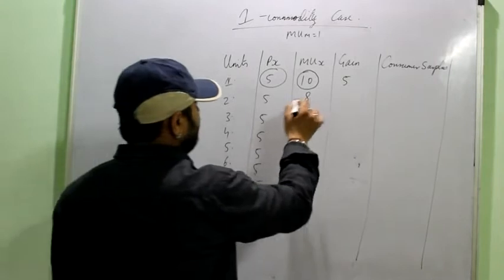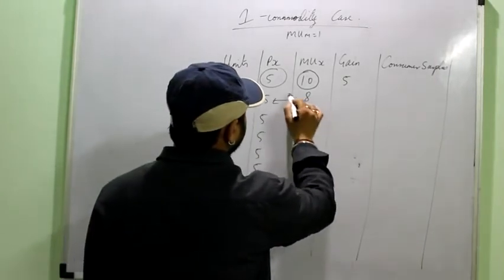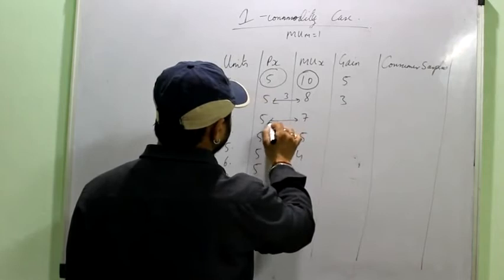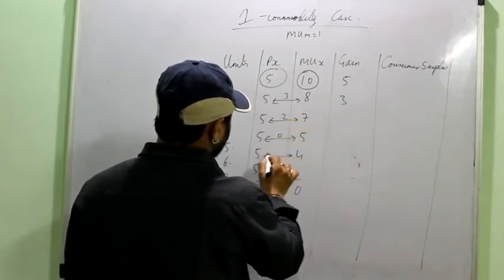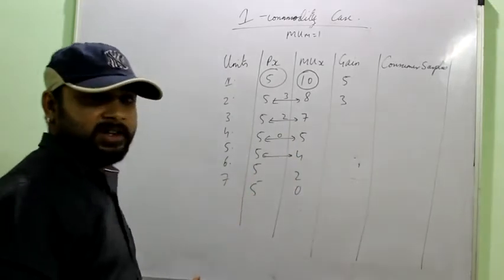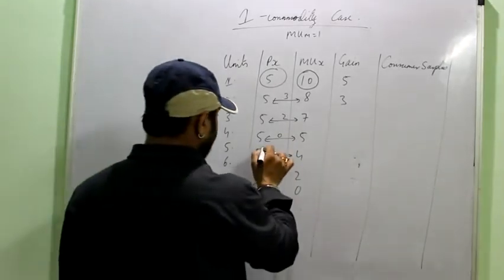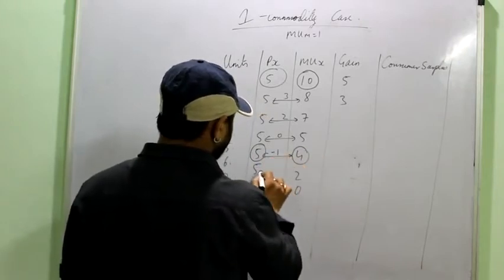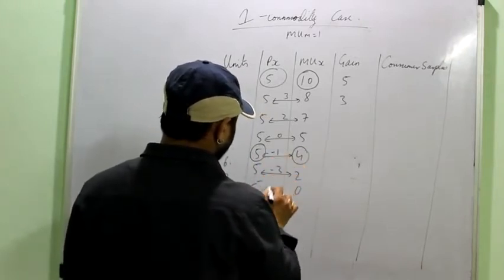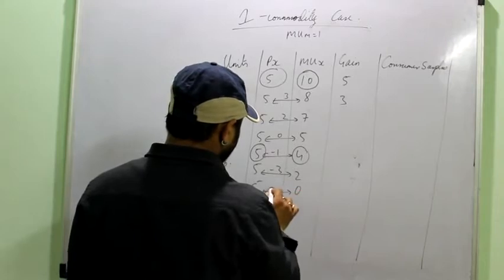If say marginal utility of money would have been 2, then first I will have to divide MUx by 2, then I will get MUM and then I will compare it with the price. In the first commodity when the consumer is consuming, he is getting the utility of 10 utils but he is spending only 5 utils, only 5 utils are going from his side, so it means his gain is 5. Again, for the second commodity the gain is 3. For the third commodity it is 2, then 0. Now, consumer has started facing a loss. Paying 5 and getting utils only 4. So, he is minus 1, then he is at a loss of minus 3 and then minus 5.